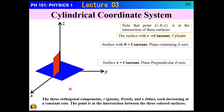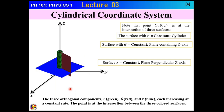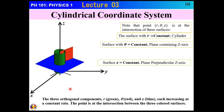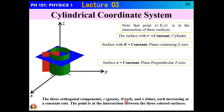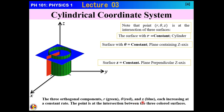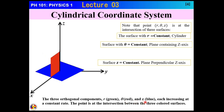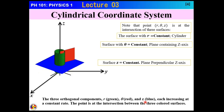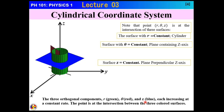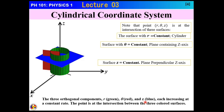The bottom line is that we have three orthogonal surfaces: r equal to constant (green), theta equal to constant (red), and z equal to constant (blue), each increasing at a constant rate. The point is at the intersection of these three colored surfaces.